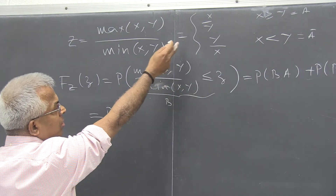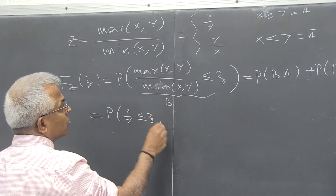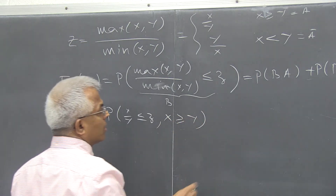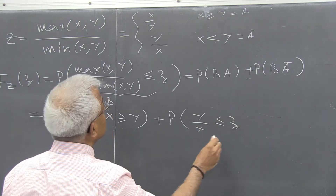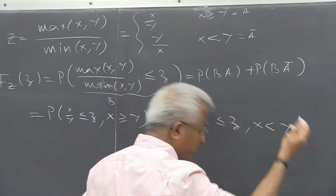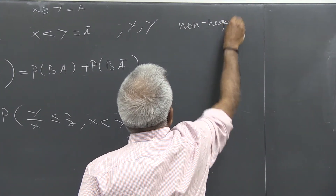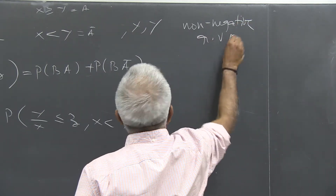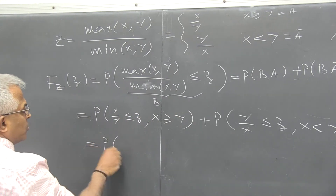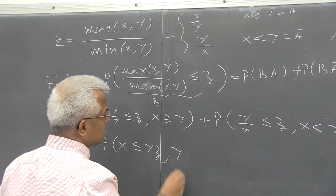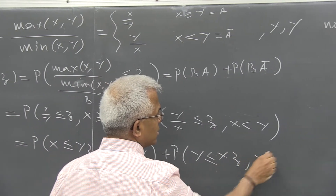When A is true, B is X over Y, so this is the probability of X over Y less than or equal to z when X is greater than Y, plus probability of Y over X less than or equal to z when X is less than Y. To make it simple, I am going to assume that X and Y are non-negative random variables. Since X and Y are non-negative, this is the same as probability of X less than Yz when X is greater than Y, plus probability of Y less than Xz when X is less than Y.